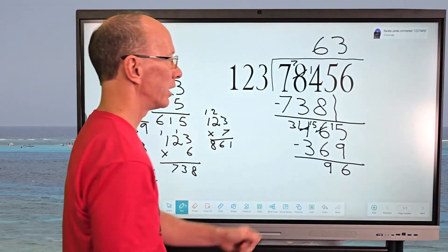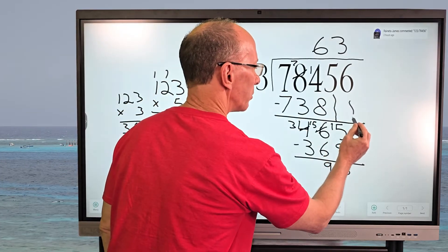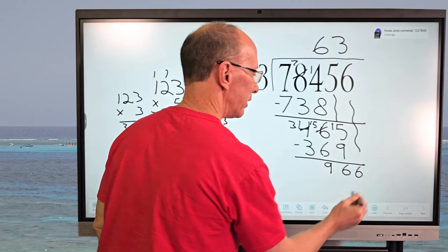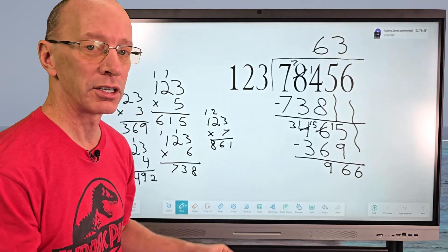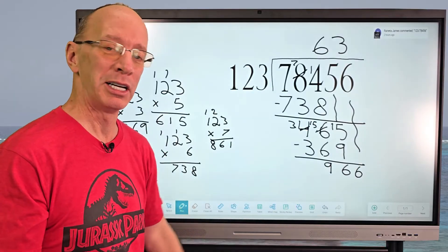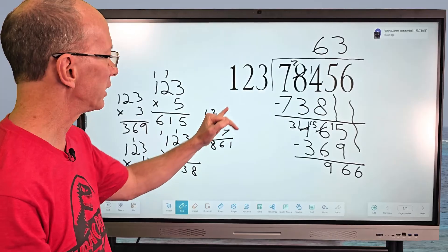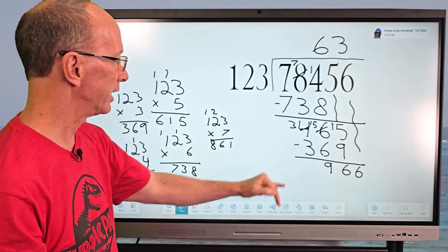And then I go ahead and drop the next number down, which is that six. And drop it all the way down right here. And this answer, I'm just going to go ahead and turn into a remainder. Because if it's going to be a decimal point, I might be here for a little while.